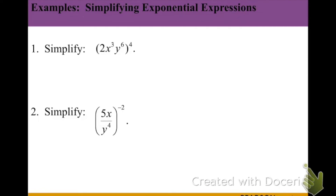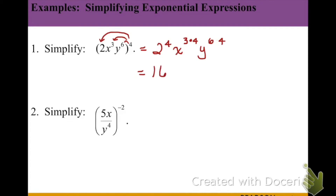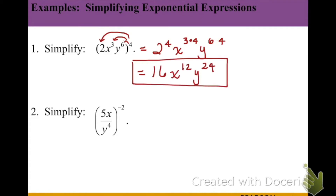In the first example, we distribute the fourth power using the power of a product rule to the 2, the x, and the y. 2 to the fourth gives us 16. x cubed raised to the fourth: 3 times 4 is 12, giving x to the 12th. y to the sixth raised to the fourth: 6 times 4 is 24, giving y to the 24th. Our final answer is 16x to the 12th, y to the 24th.